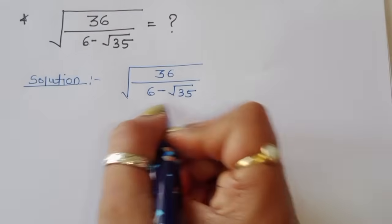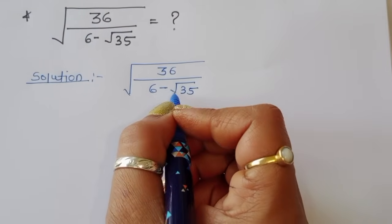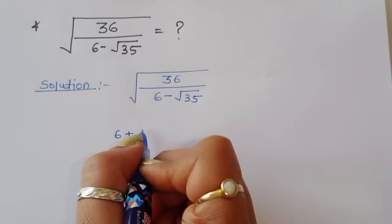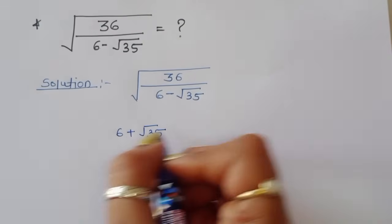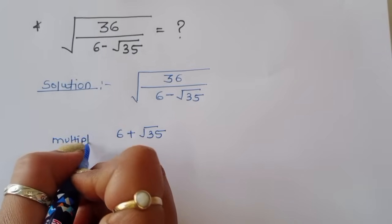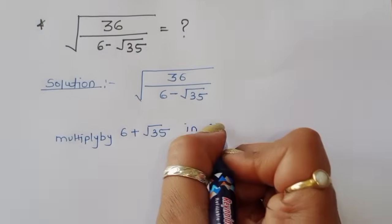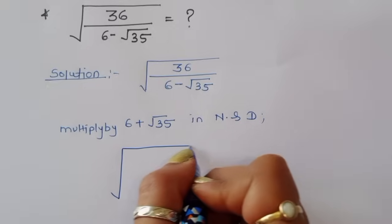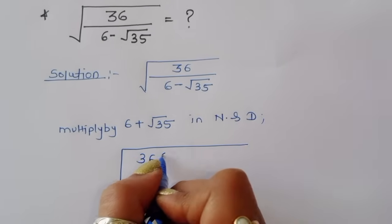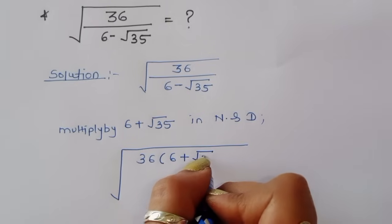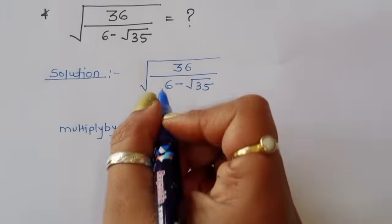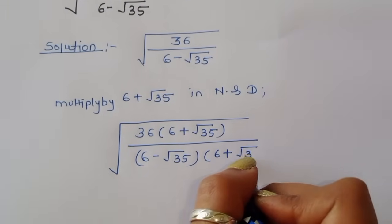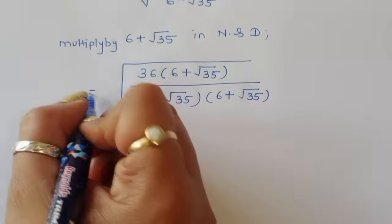We can rationalize this denominator. So we multiply in the numerator and denominator by the conjugate: 6 plus square root of 35. After multiplying, we get 36 times (6 plus square root of 35) divided by (6 minus square root of 35) times (6 plus square root of 35).